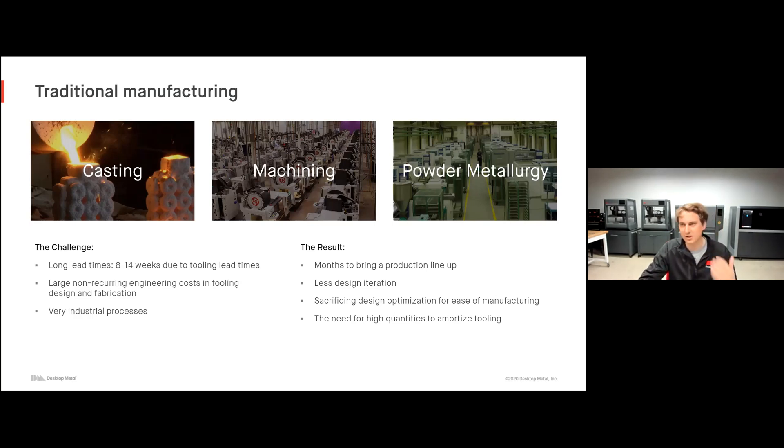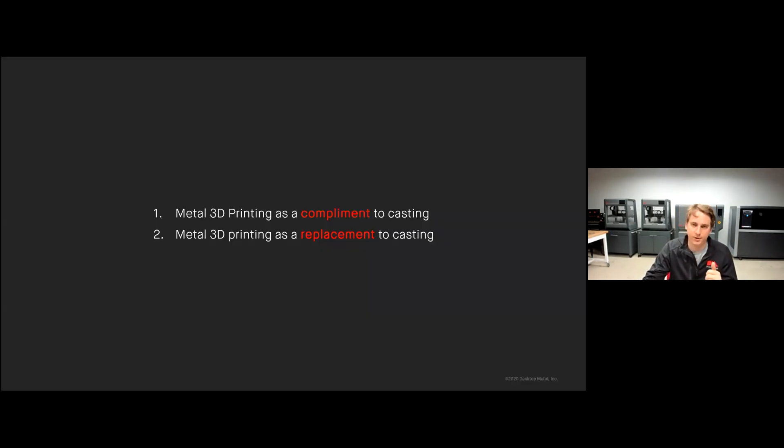While today we're mostly talking about casting, these challenges and results are really true for almost all traditional manufacturing methods, whether we're talking about machining or powder metallurgy like press-and-sinter or MIM. Of course, today we're not just here to talk about challenges and complain about challenges, we're here to talk about solutions. Metal 3D printing offers lots of solutions. Today we're going to be talking about metal 3D printing as a complement to casting, about how it can assist your traditional casting methods, and then also about metal 3D printing as a replacement to casting and some applications where you can actually just replace your foundry, replace the option of casting with metal 3D printing.